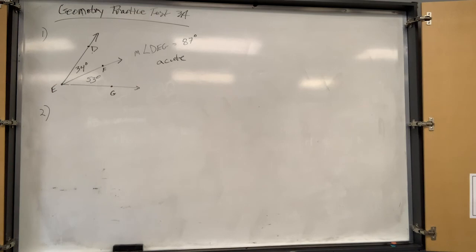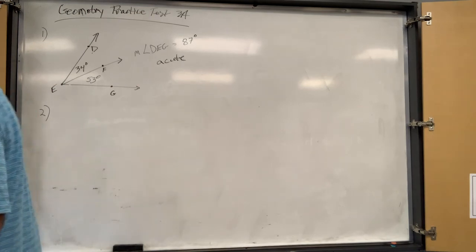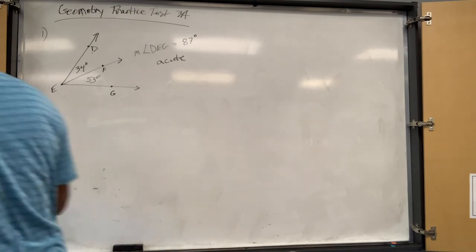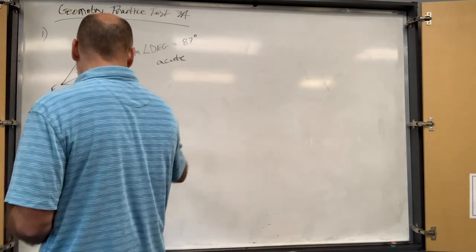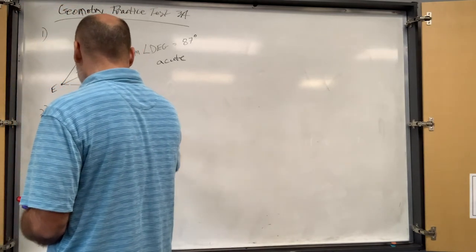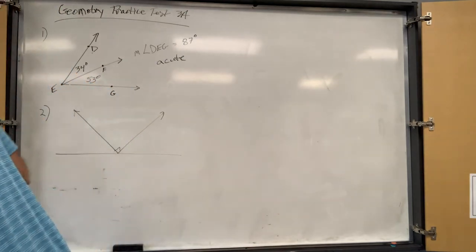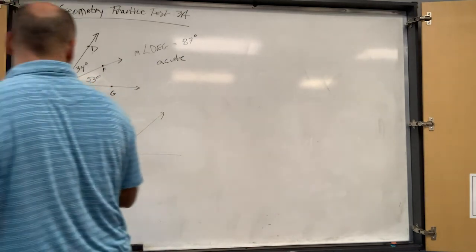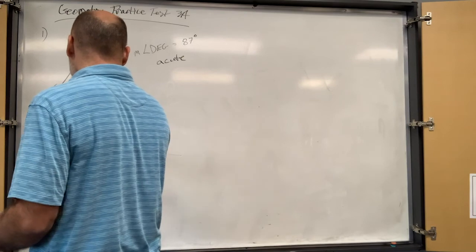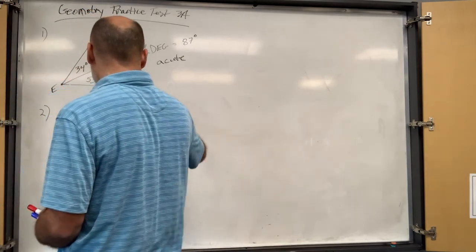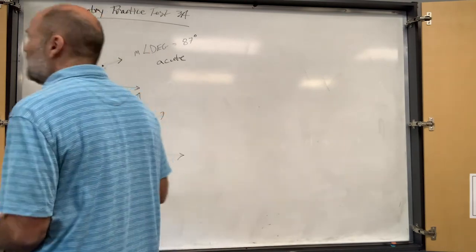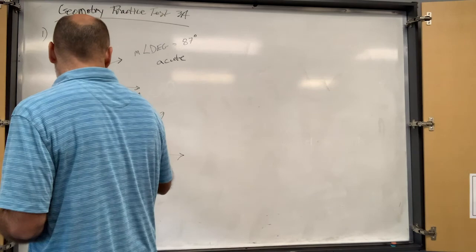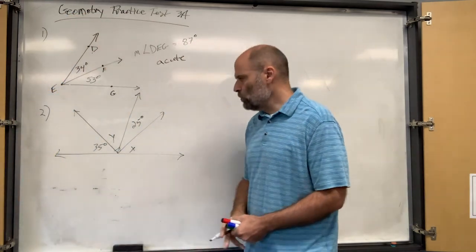Number two asks to determine the values of x and y in the diagram. We've got a right angle in the middle, and we've got 35 and 25. X is this angle and y is this angle, so I need to find those.